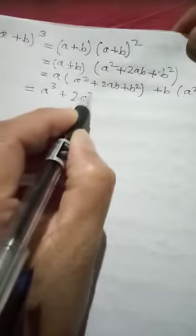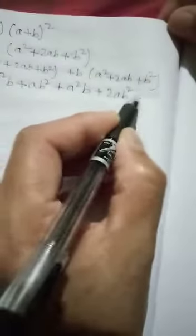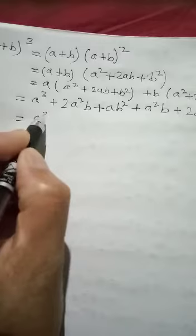Now we multiply: a × a² — there are two a's so it becomes a³. Then a × 2ab — when we have the same base, powers are added, so we get 2a²b. Then a × b² gives ab². Remember when multiplying same bases, add the powers. So from the first bracket we get a³ + 2a²b + ab².